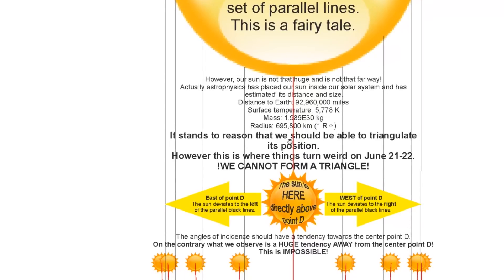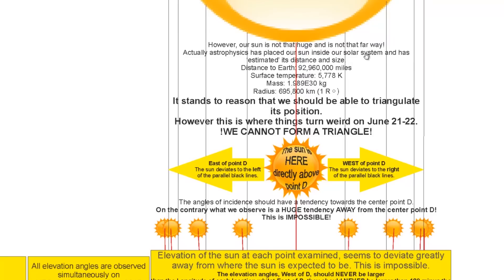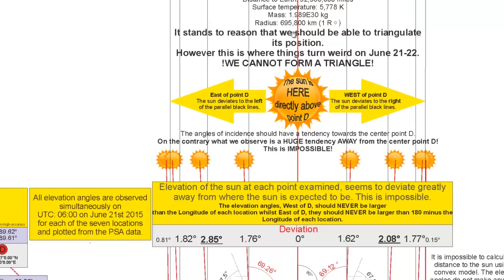Our Sun is not that huge and it's not that far away. And actually, astrophysics has placed our Sun inside our solar system and has estimated its distance and size. It stands to reason that we should be able to triangulate this position. However, this is where things turn weird on June 21st. We cannot form a triangle.